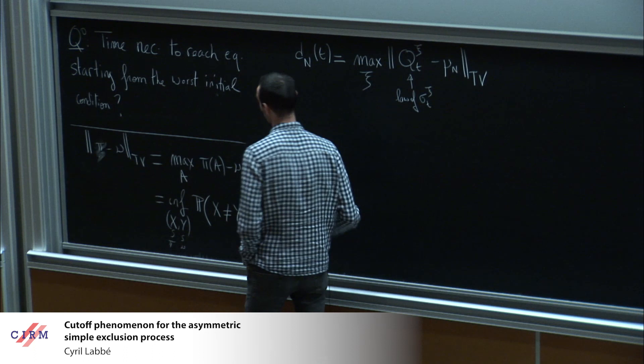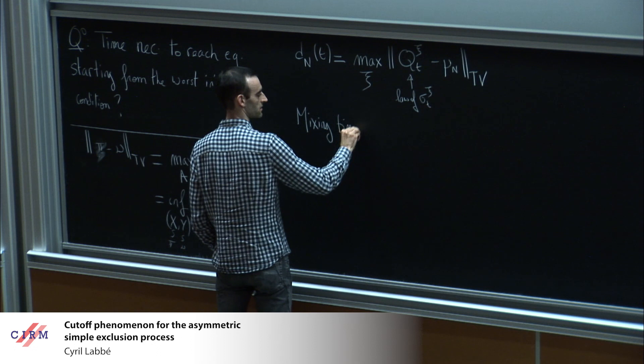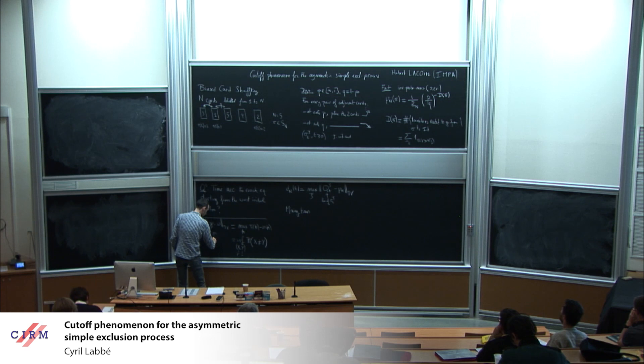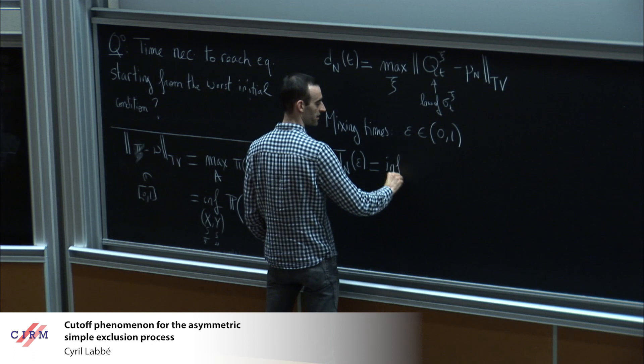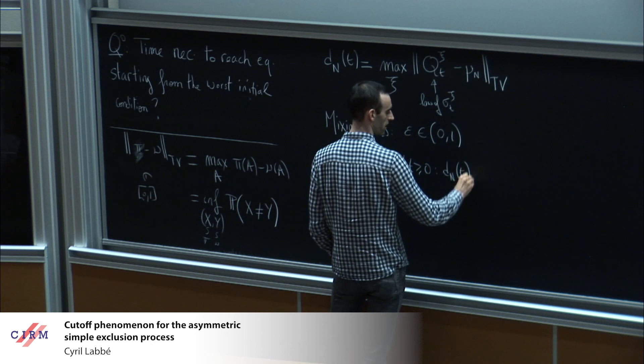I define the distance at time t from equilibrium as D_n(t) = max over initial conditions xi of the total variation distance between the law of sigma_t starting from xi and the invariant measure mu_n. The mixing time T_n(epsilon) is defined as the first time at which this distance goes below epsilon.